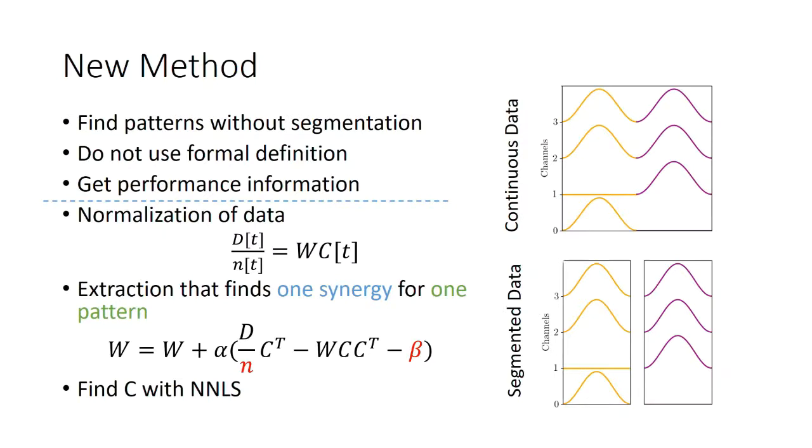What we did was get the original algorithm of spatial synergy and do some modifications. One of these modifications is how we normalize the data. Instead of normalizing the whole data, we normalize the data for every time step. To calculate the matrix W, we use this normalized data and we also added a competition term. With competition, we make sure that during a specific time step, only one synergy will be active.